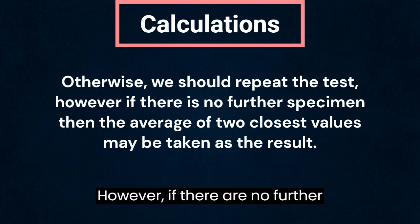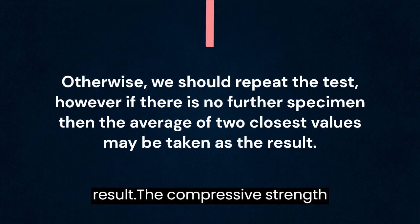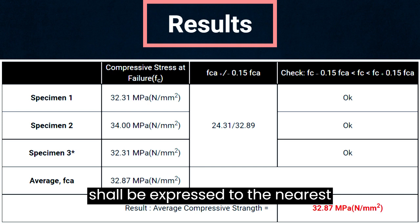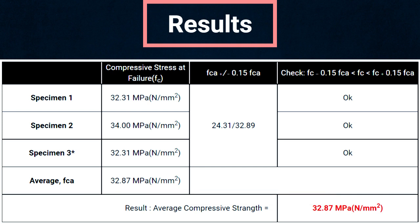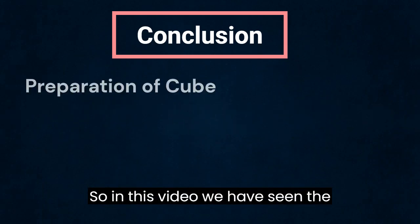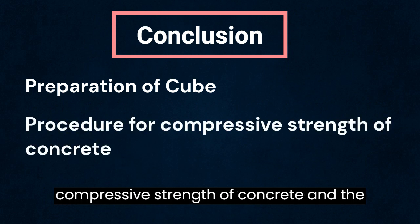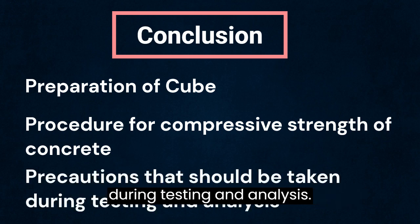However, if there are no further specimens, then the average of 2 closest values may be taken as the result. The compressive strength shall be expressed to the nearest 0.5 MPa. Our experimental compressive strength was 32.87 MPa. In this video we have seen the preparation of cubes and the procedure for compressive strength of concrete, and the various precautions that should be taken during testing and analysis.